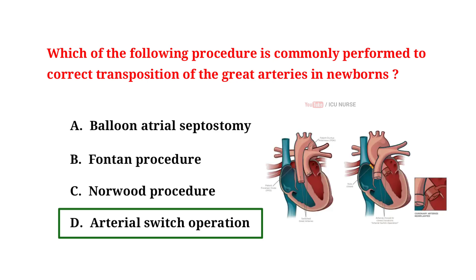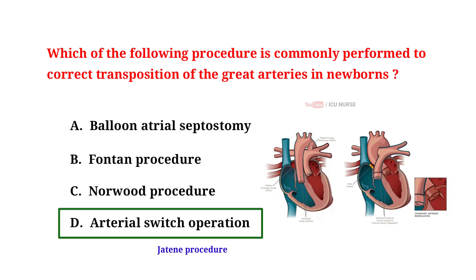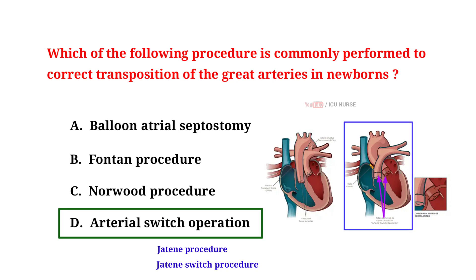The procedure commonly performed to correct transposition of the great arteries in newborns is called the arterial switch operation. This operation is also known as the Jatene procedure or Jatene switch procedure. This surgery switches the positions of the major arteries to their correct locations.